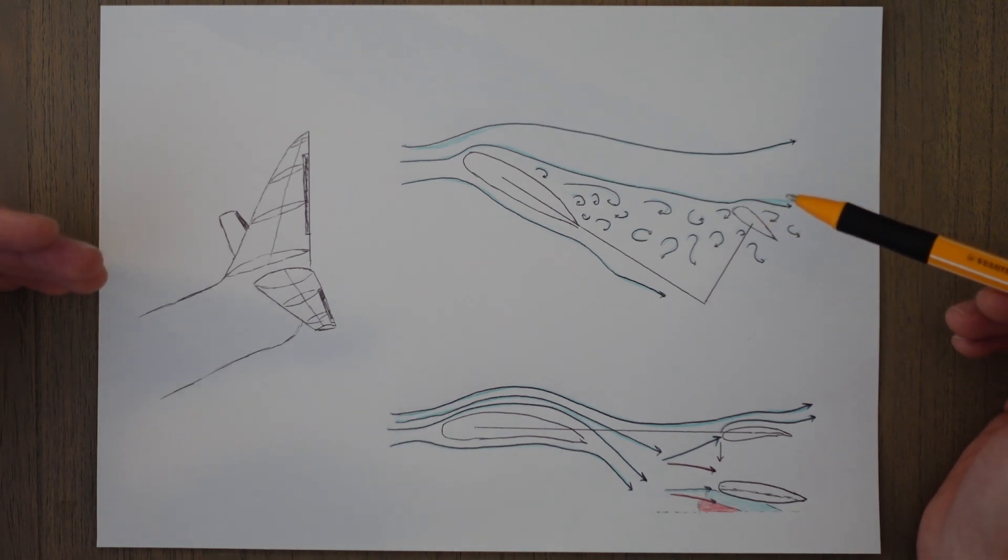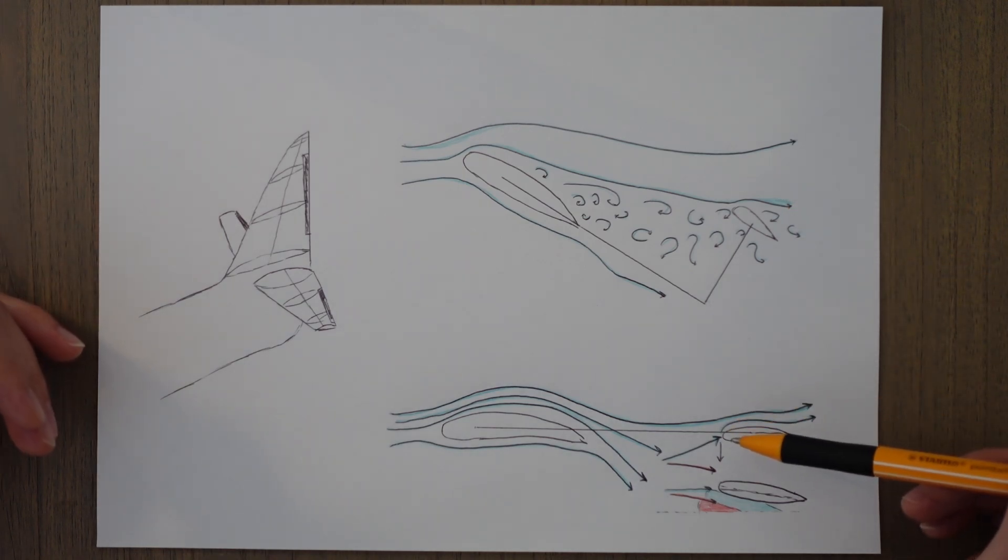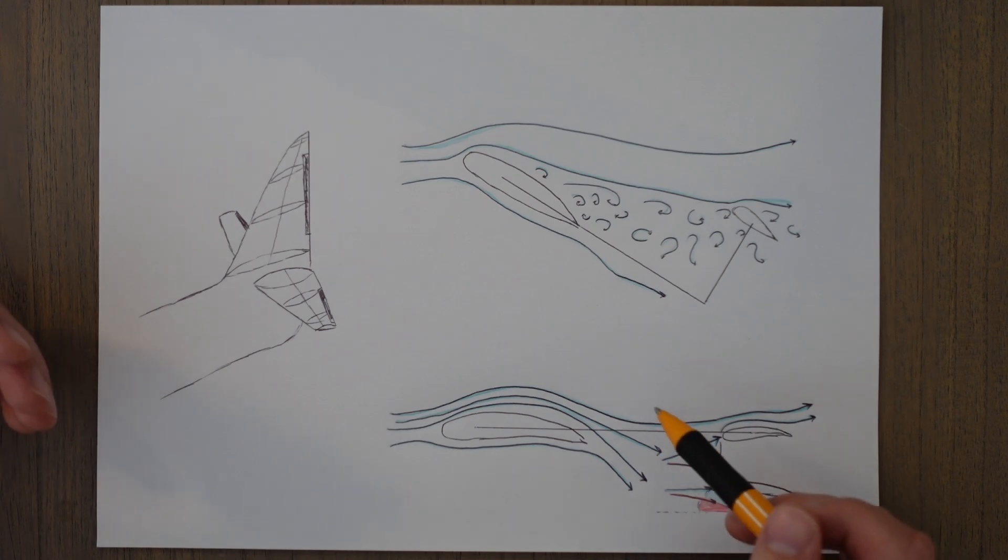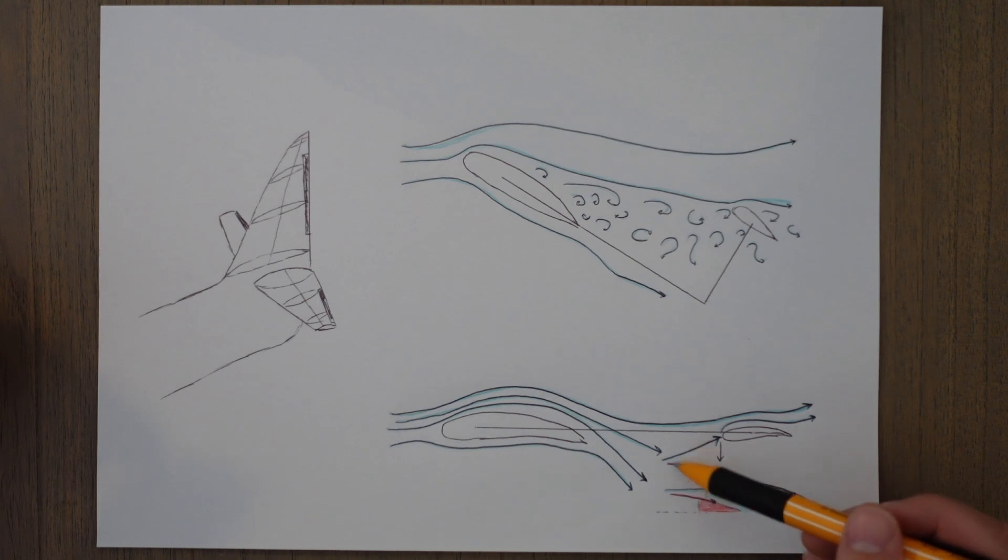However, you will still see T-tails out there. Why is this? Well, the mid-mounted tails are affected by the airflow coming off the back of the wings in normal flight. The wings basically force the air to flow downward after it passes over it in a phenomenon called downwash. This downwash changes the direction of the relative airflow over the tail plane.